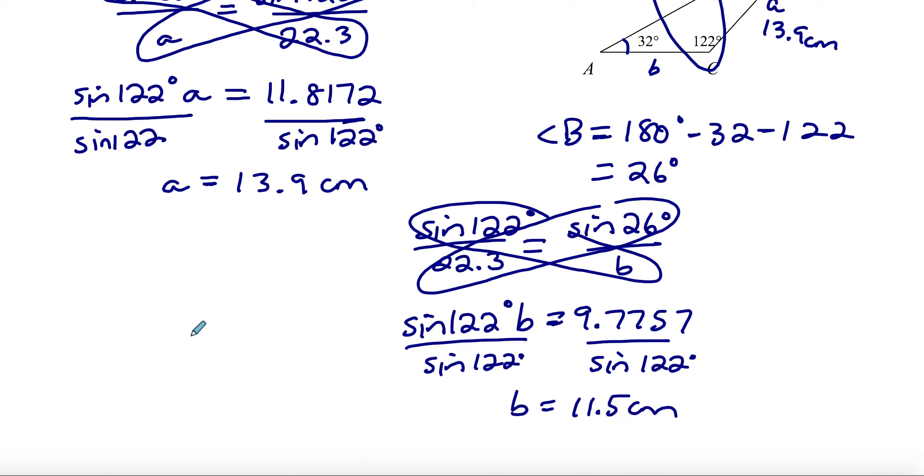What I think is really important for these questions is that you would have a therefore statement, and at least show the measurements of all three things that you found. So we found one angle and two sides.